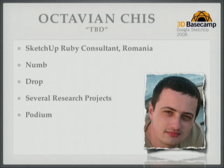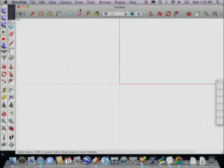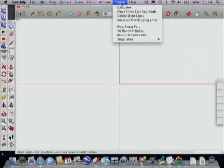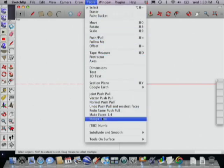Tavi — he goes by Tavi Octavian or TBD on the forums — is a SketchUp programmer and consultant who lives in Romania. He tried to come to the 2005 and 2008 conferences but visas weren't working for him. The very first script he wrote was Numb, and I'm going to run it for you now. There's a good-looking web dialog.